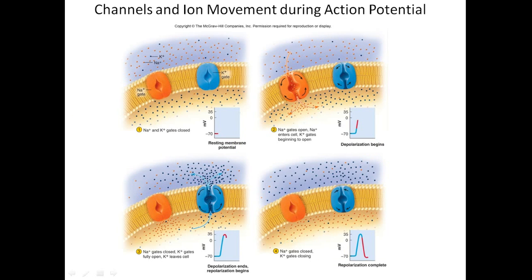This picture shows the ions changing and the charge changing inside the cell. At number one — resting membrane potential — the sodium VGCs and the potassium VGCs are closed. There is lots of potassium inside the cell and more sodium outside the cell.